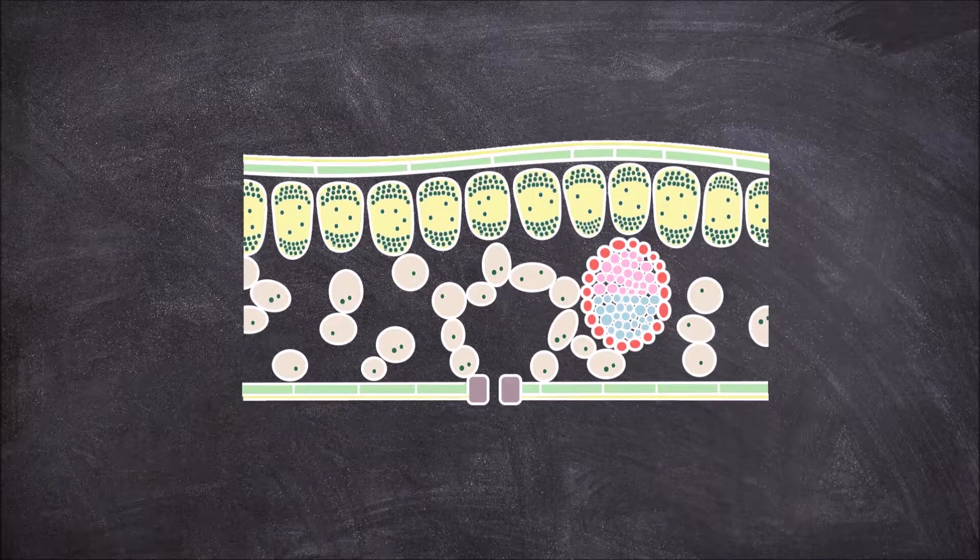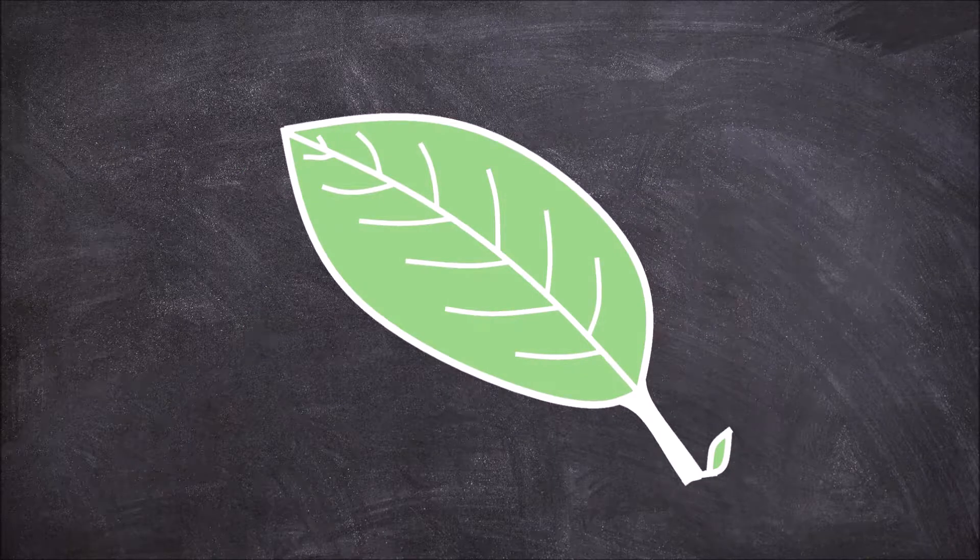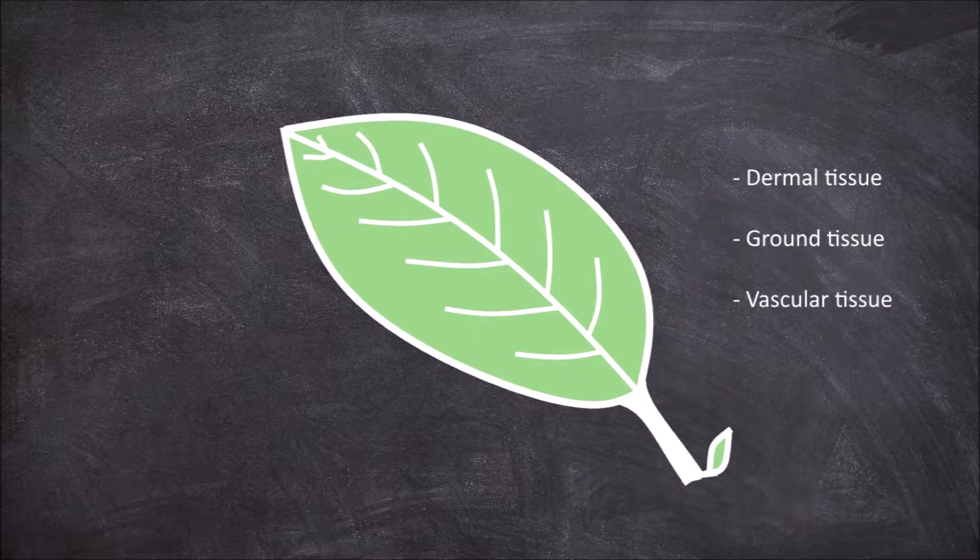In this video we are going to go over the internal anatomy of a leaf. Within the leaf, like in all other plant organs, there are three types of tissue: dermal, ground, and vascular tissue.